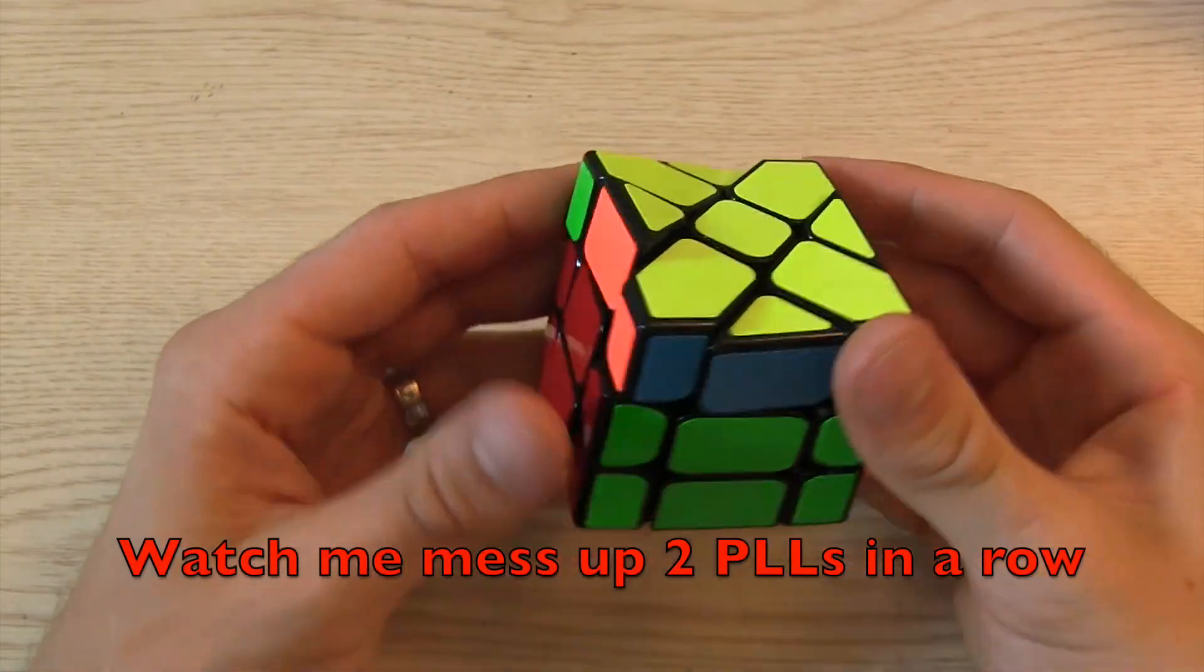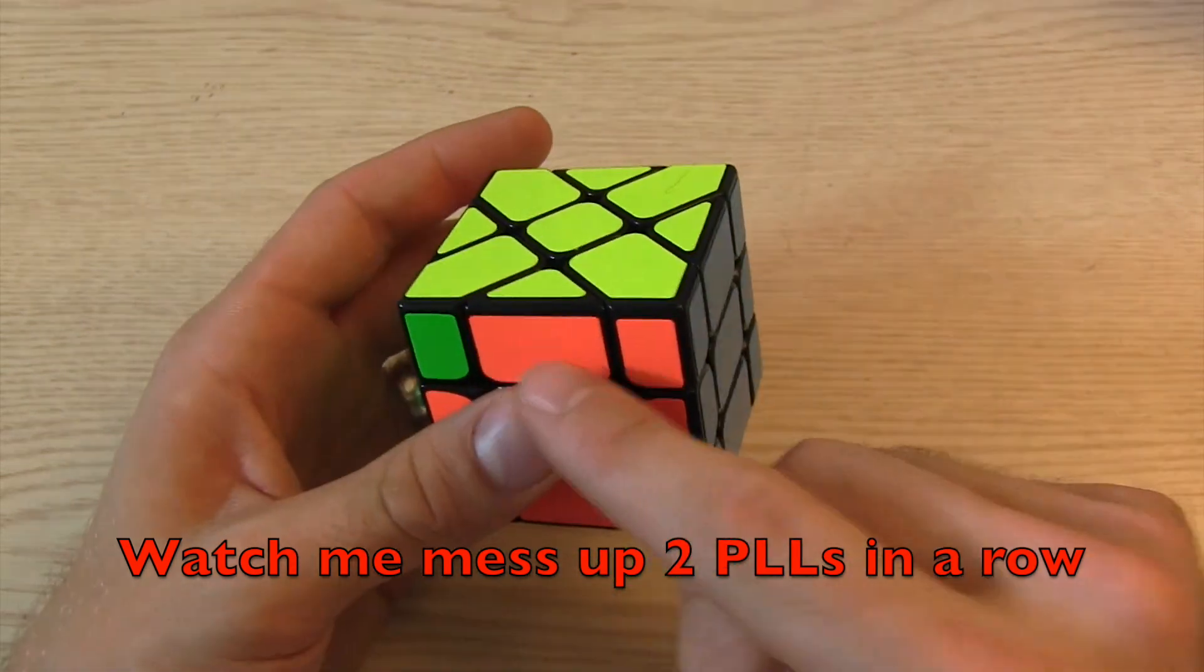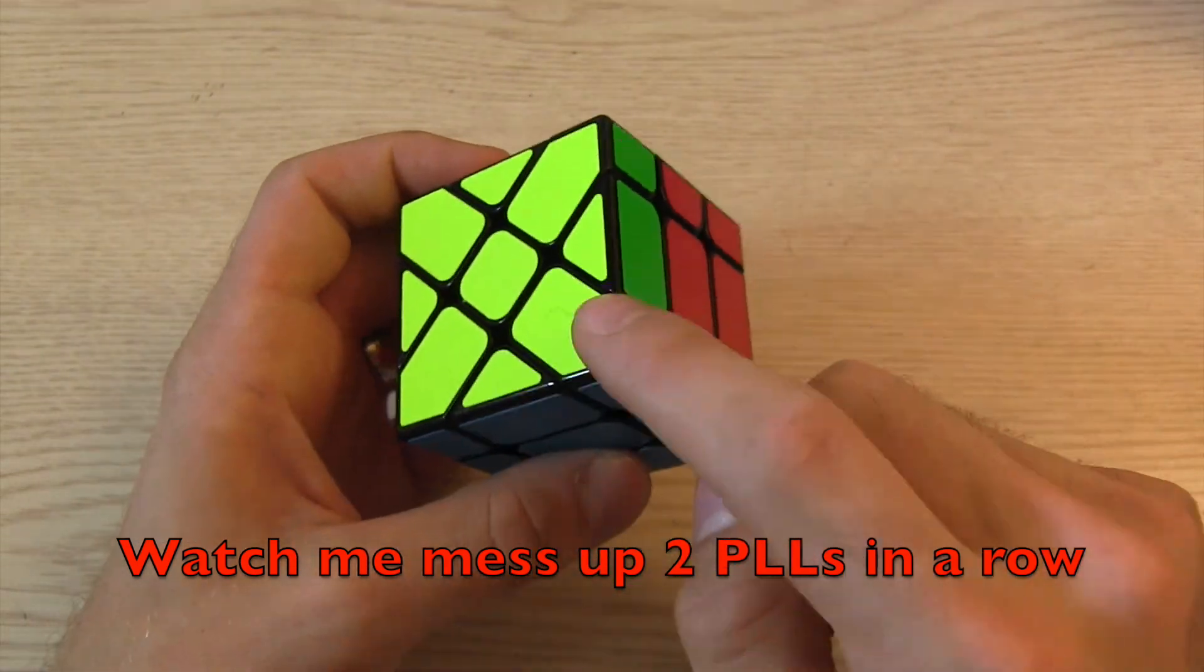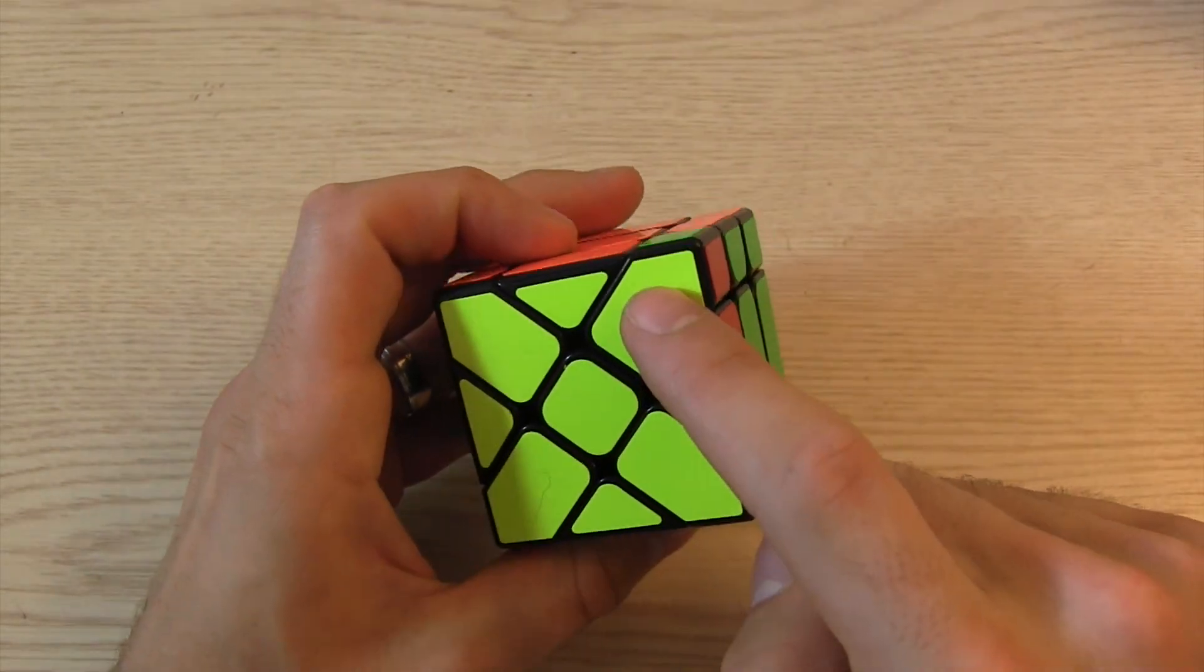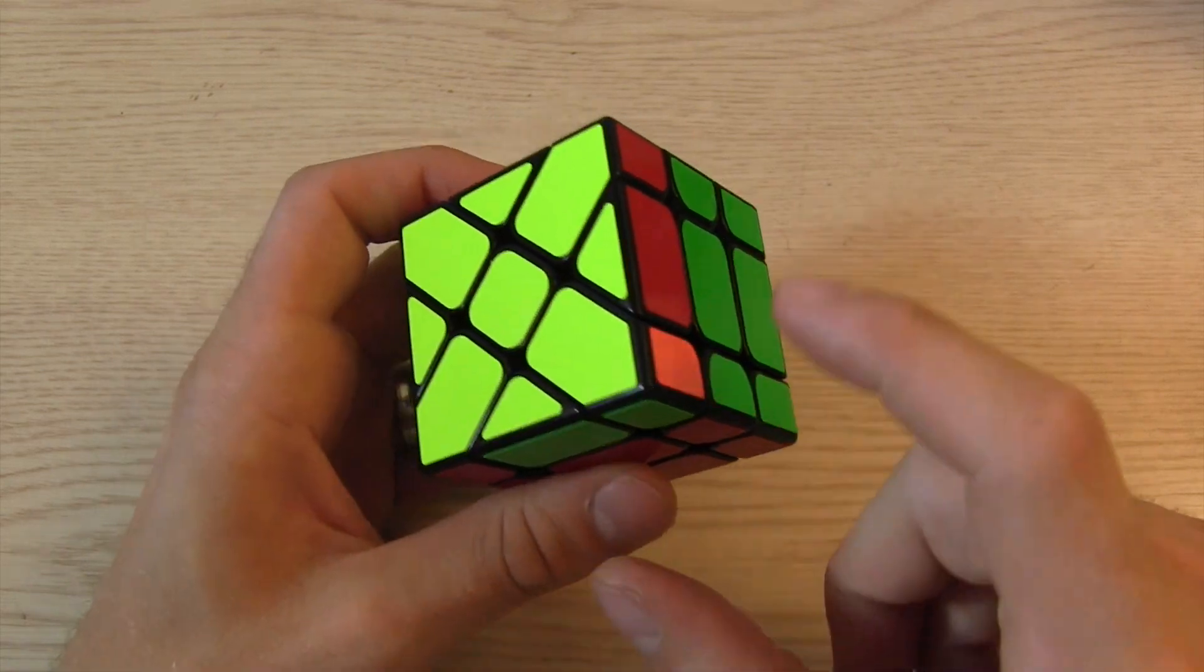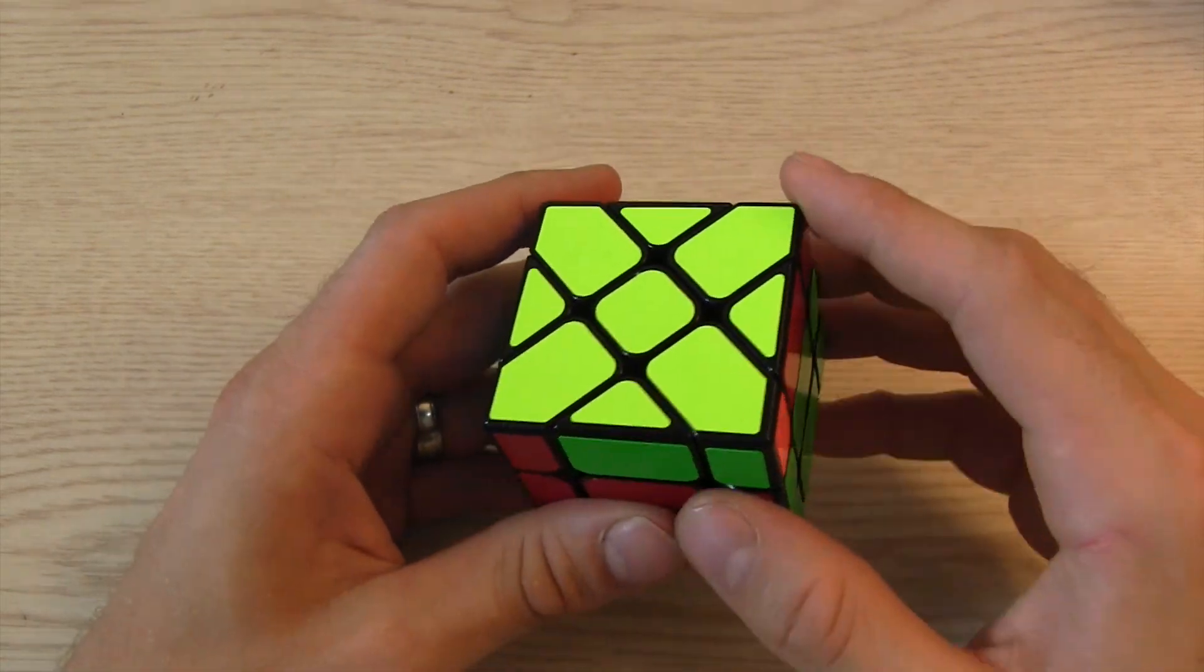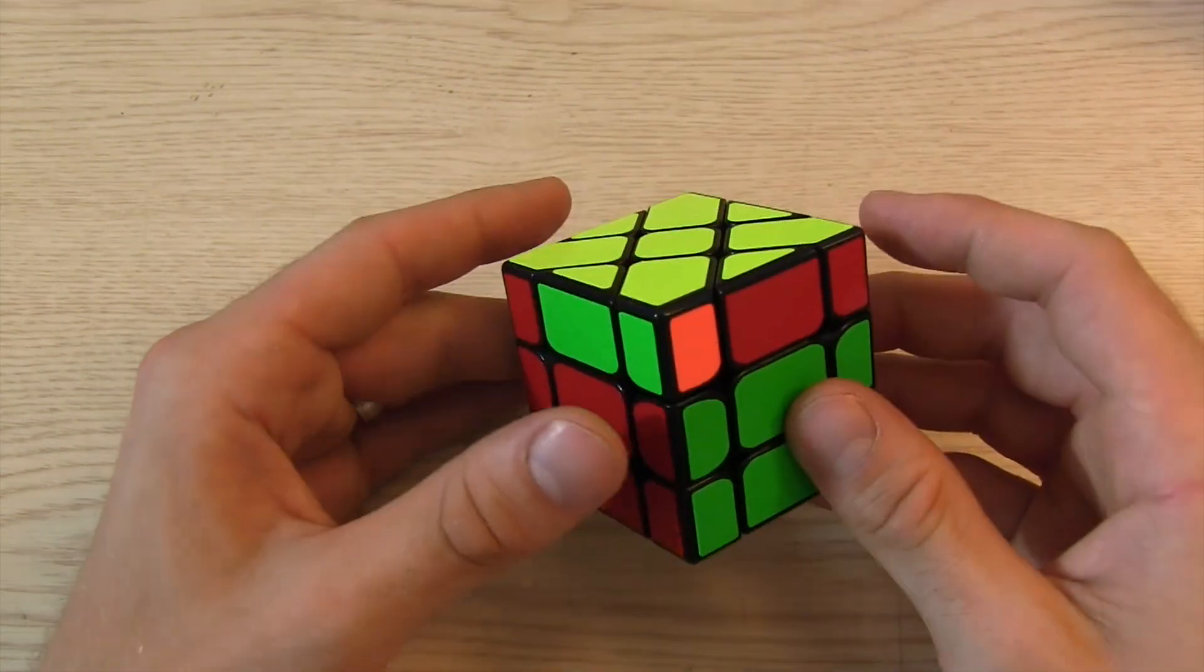Now for this one, we line this up. So those are correct. We've got edge, edge, corner, corner. And then we have edge, corner, edge, corner. And so these need to be swapped, and these need to be swapped. And that's just like a J permutation.